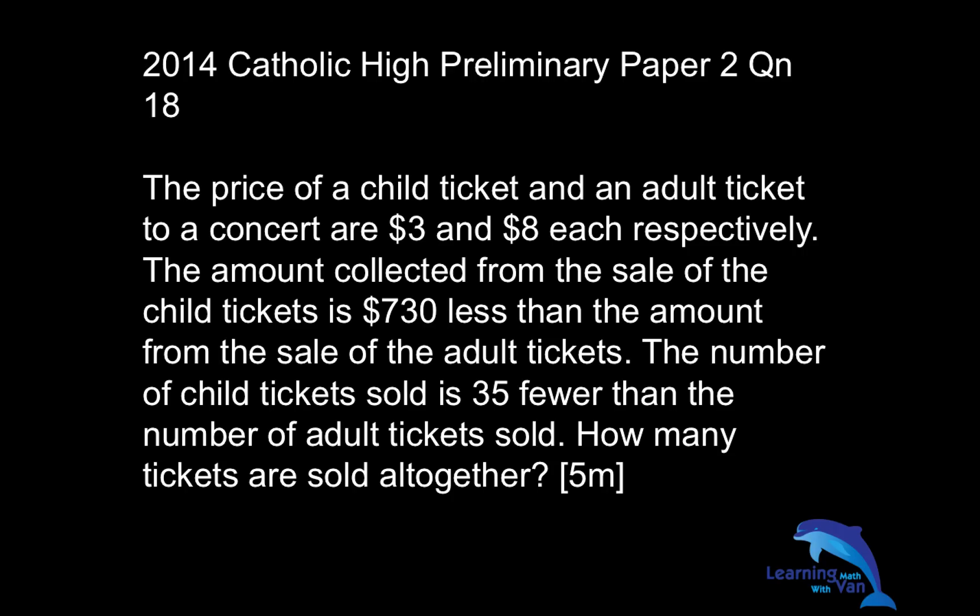The same logic, same reasoning, is how I can apply it in this particular case. There's nothing wrong with using the total value concept. You may want to use one unit for the child tickets and then one unit plus 35 for adults, then multiply by 3 and 8 respectively, and you'll get your answer.